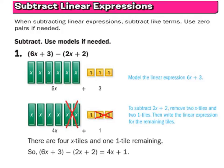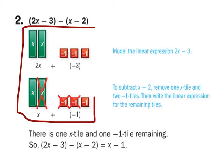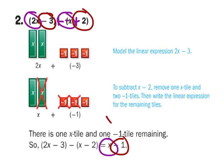On this one, notice they've used the term 'zero pairs' — that's just a fancy way of saying we're subtracting. You can use models like green rectangles and red squares, but really all we're doing is changing the signs and making it a positive, a negative x, and then a plus 2. You've got two x's minus 1x which gives you an x, and negative 3 plus 2 gives you negative 1, so x minus 1.